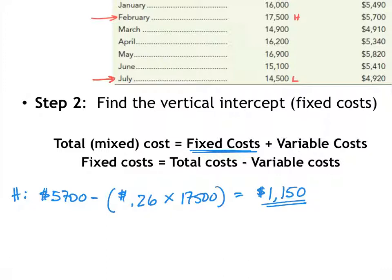Or you could do the low level. So at the low level my costs were four thousand nine hundred twenty dollars minus my variable cost which are zero point two six dollars per mile. And we have fourteen thousand five hundred miles at the low level. And we do the math. You should get one thousand one hundred fifty dollars. So notice they're the same answer. So it doesn't matter which one you do in step two but you should get the same response there.